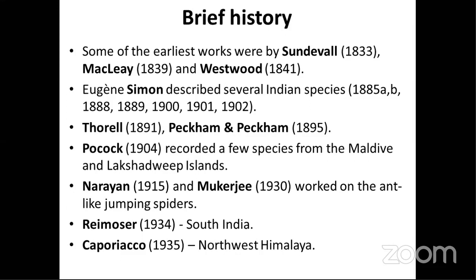After 1841, about 40 years later, Eugene Simon described several Indian species starting from 1885 to 1902 — a lot of species all over the world, including many from across India. Then Thorell, in 1891, worked on fauna from the Nicobar Islands and described many species. Peckham and Peckham worked on a few species from Calcutta, the Himalayas, and Sri Lanka. Pocock in 1904 recorded a few jumping spiders from the Maldives and Lakshadweep. Narayanan in 1915 described about six to seven different species of ant-mimicking jumping spiders. Mukherjee in 1930 also worked on ant-mimicking jumping spiders.